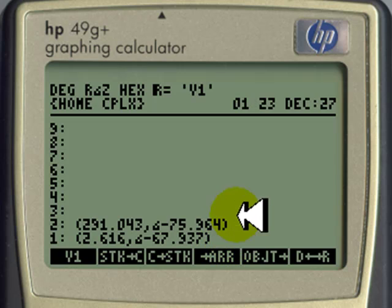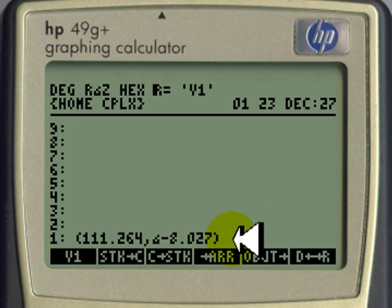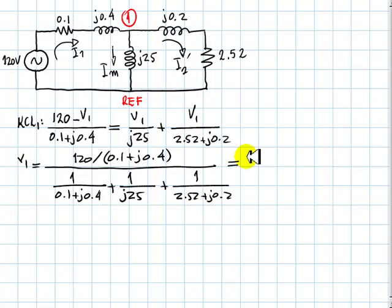Divide numerator by denominator, that is the voltage V1: 111.3 volts with an angle of negative 8.03 degrees. That is V1, that is the voltage there.